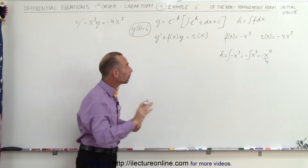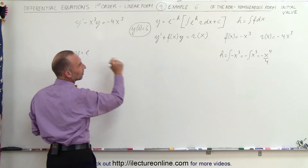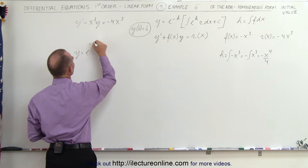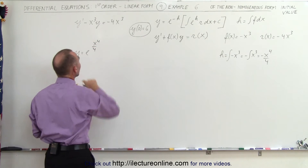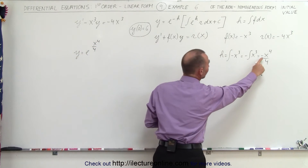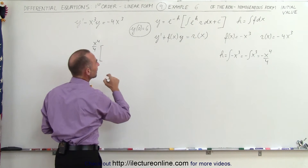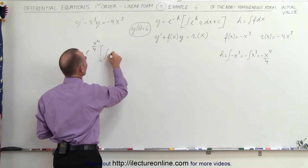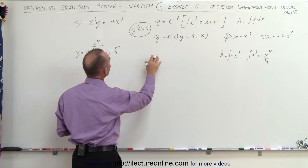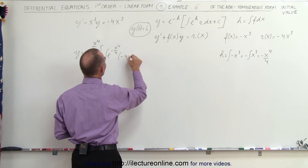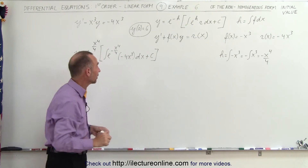Now we plug it into the general form of the solution. We have y equal to e to the minus h — since h is minus x to the fourth over 4, minus h becomes plus x to the fourth over 4. Times the integral of e to the h, which is e to the minus x to the fourth over 4, times r which equals minus 4x cubed, dx, plus the constant of integration.